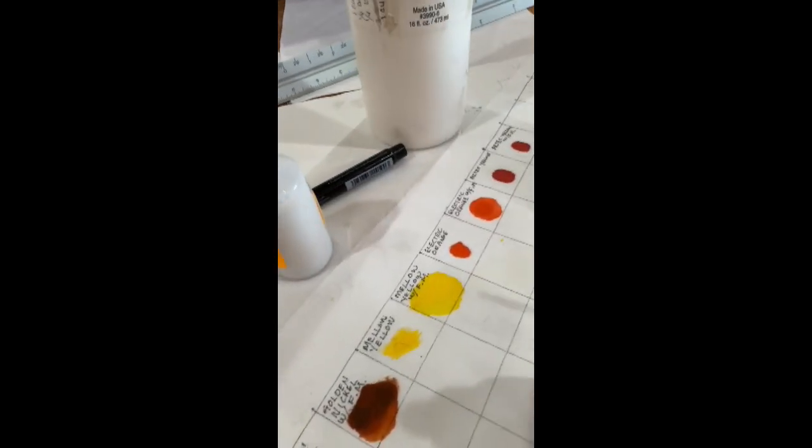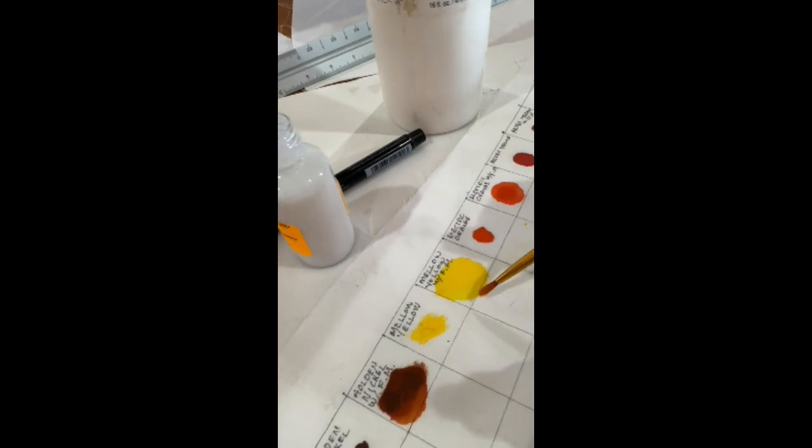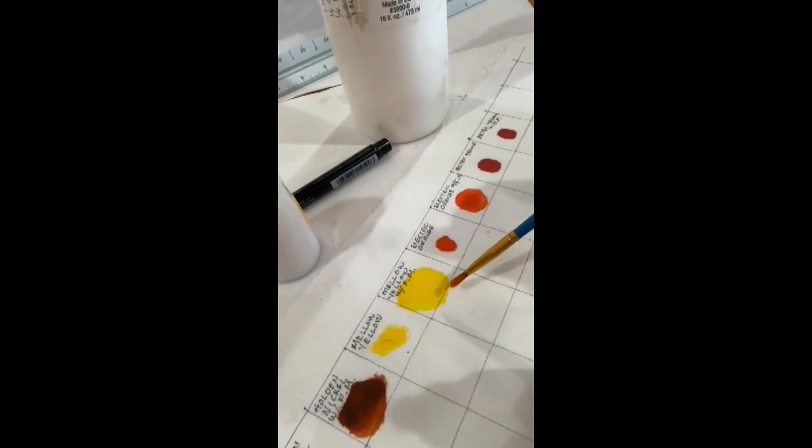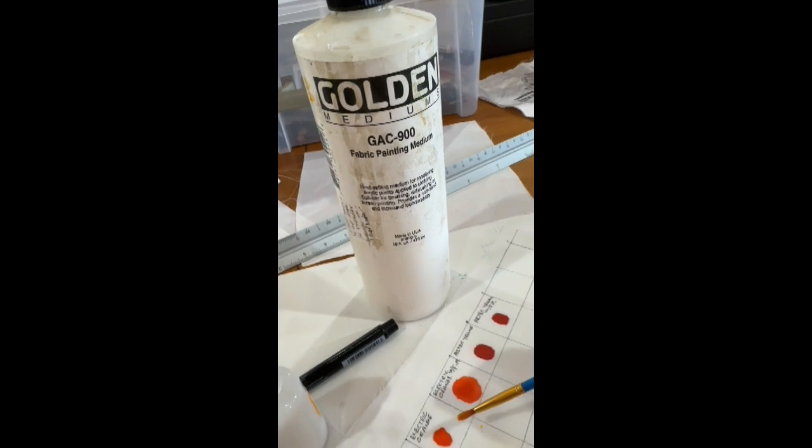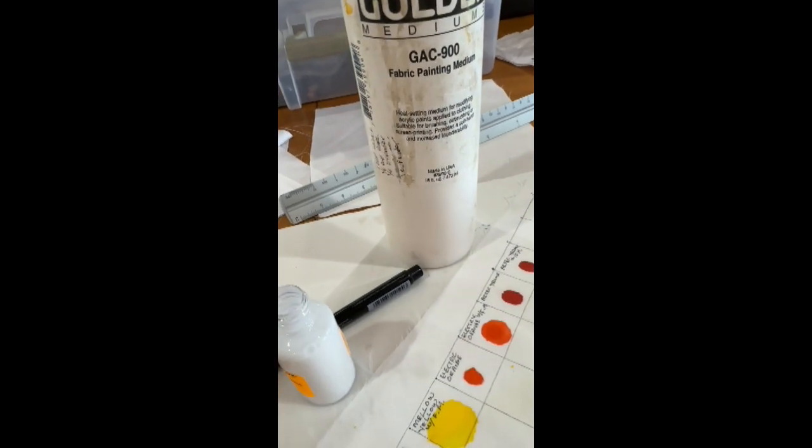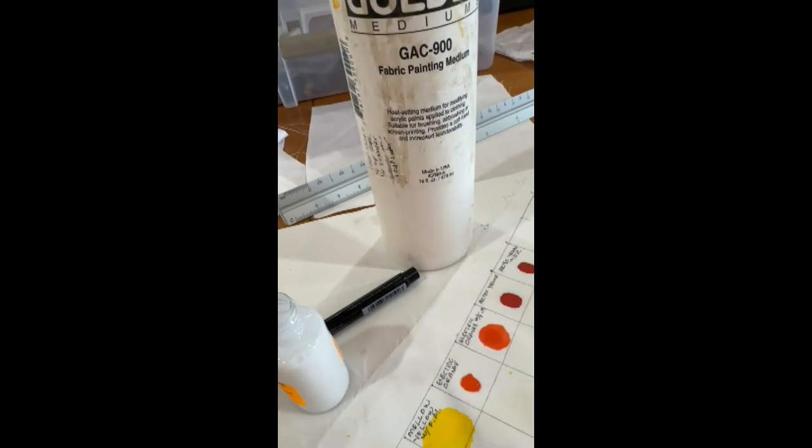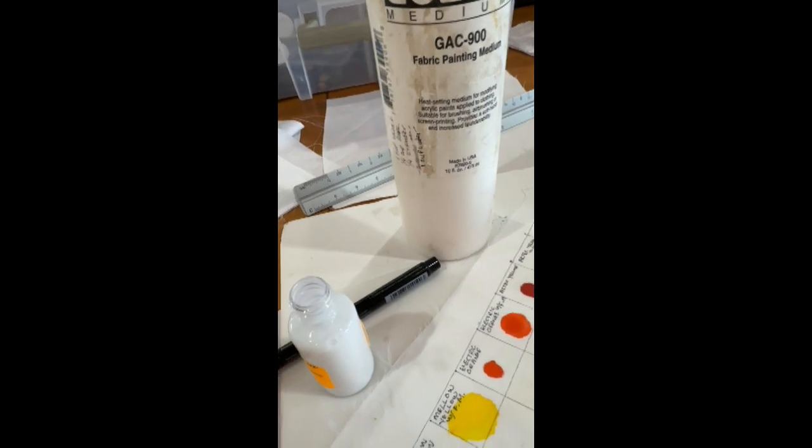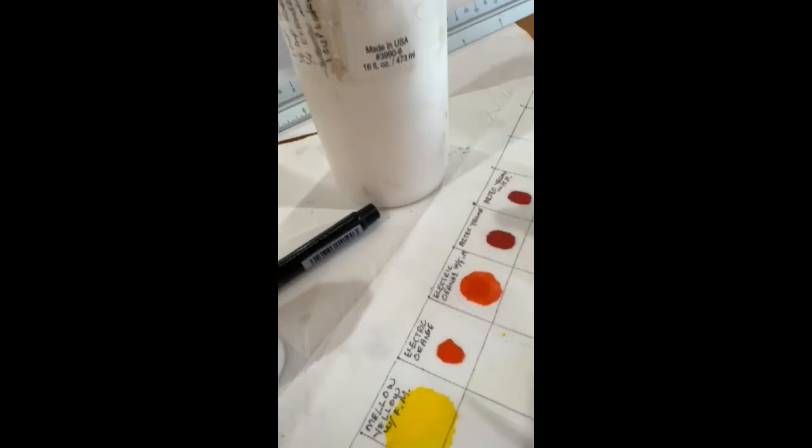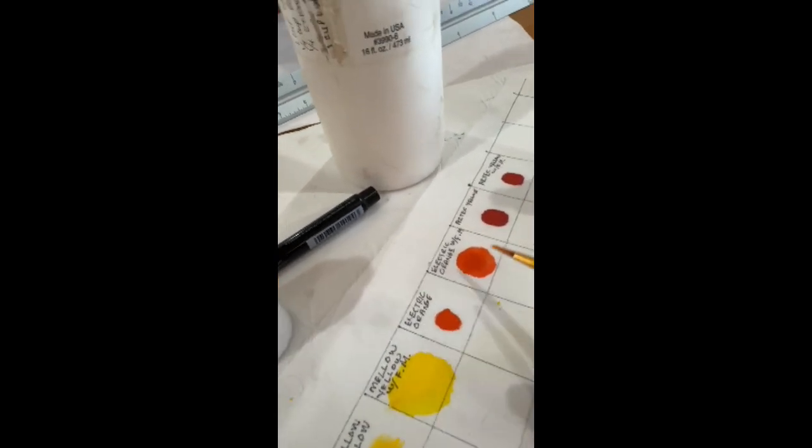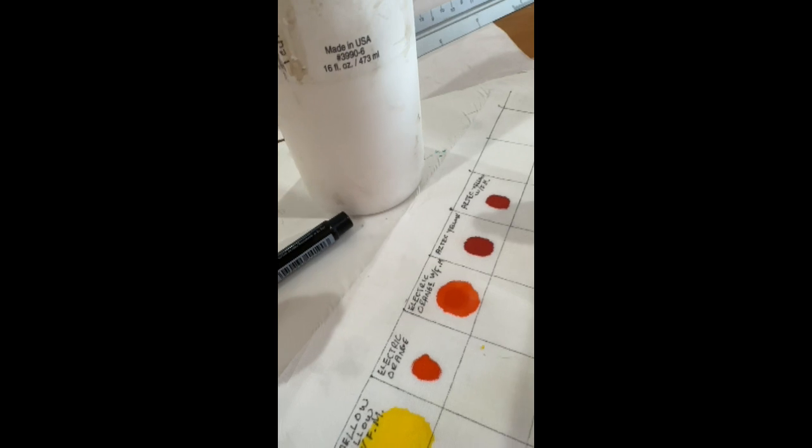Okay so I've done a couple of tests so far. I just want to point out the bleeding and that's because I was using this. Now I typically love Golden's medium however in this particular case it's not doing me any favors because the colors are really bleeding, spreading rapidly.